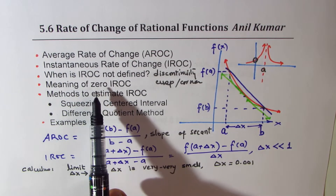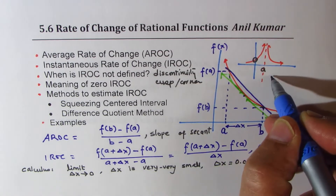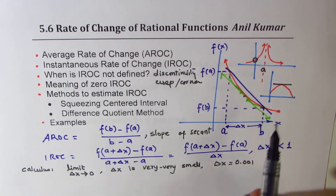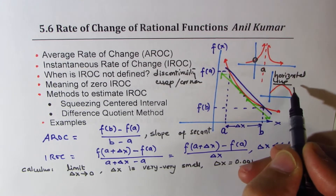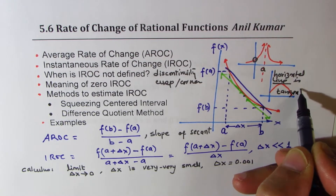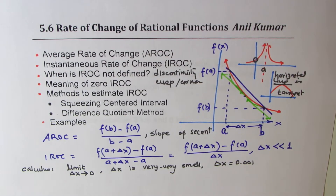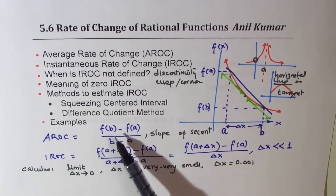Another question: what is the meaning of zero instantaneous rate of change? There are times when the slope is zero at a point. For example, if you consider the path of a ball in projectile motion, the slope at the top is zero — meaning the tangent line is horizontal. So the meaning of zero instantaneous rate of change is that the tangent line is horizontal.